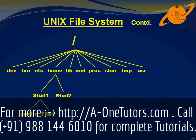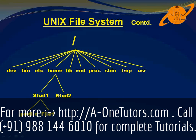Here is a simple example in which I will explain the file system. Every Unix file system starts with a forward slash. This forward slash has a lot of children called dev, bin, etc, home, lib, mnt, prog, sbin, tmp, and usr. So these are nothing but files or directories.